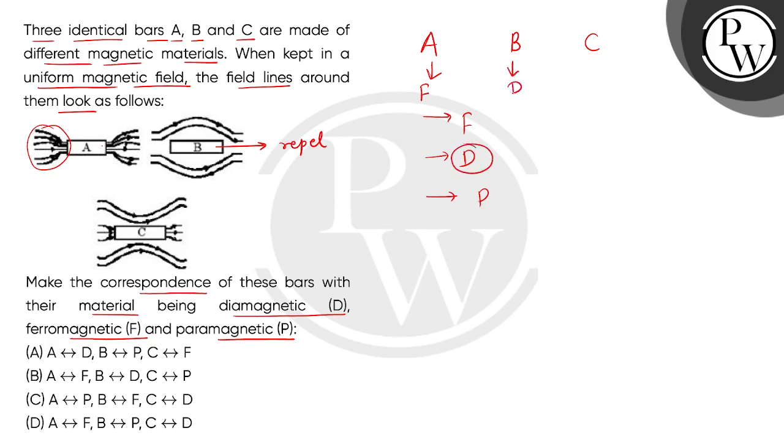It means B is diamagnetic. So if we check material C, then the magnetic lines are somewhat attracted to the magnetic lines, but it is not passed from itself. So it means which material is attracted in the magnetic field? That is the paramagnetic.